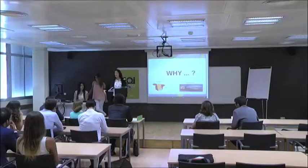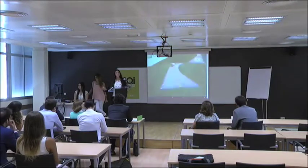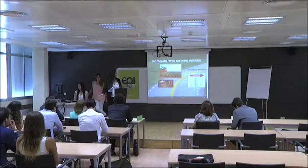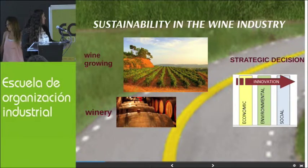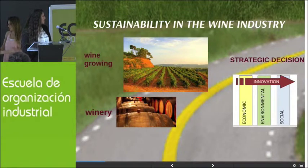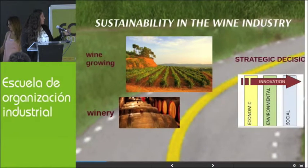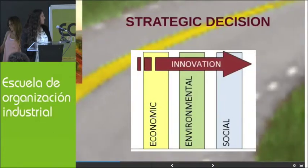The three main sustainability pillars are economic, environmental, and social. We're going to tackle this when we talk about sustainability in the wine sector. Why Spain? Because it's an important economic source that encourages a lot of work and economic development for people in the region. We're going to address wine growing in the vineyard and the wineries as a strategic decision, covering those three main pillars: economic, environmental, and social.